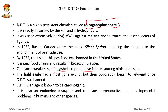DDT can cause weakening of eggshells, resulting in reproductive failures among birds and fish. These eggs become weak and break down before hatching, causing failures in ovum, testes, and testosterone function in birds and fish. The bald eagle had almost gone extinct, but its population began to recover once DDT was banned — a classic example of how DDT acted on animals and birds.